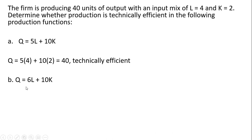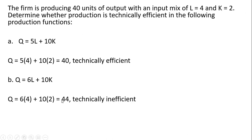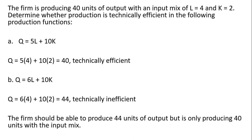Now let's say the firm's production is described by this new production function. Is 40 units of output still technically efficient with this input mix? We plug this input mix into the production function, and it tells us the firm should really be producing 44 units, but it's only producing 40. So the firm is not getting as much as it can from its input mix — this is technically inefficient.